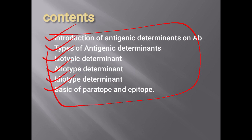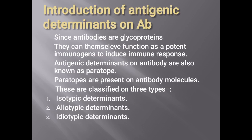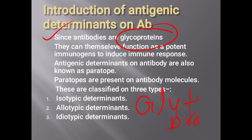Since antibodies are glycoproteins, they can themselves function as potent immunogens to induce an immune response. The word 'glycoprotein' is a combination of 'glyco' meaning glucose, and 'protein' — so antibodies are formed by two basic biomolecules: glucose and protein. They can therefore function as potent immunogens to induce an immune response.